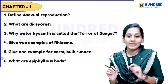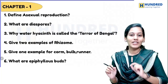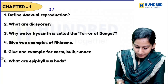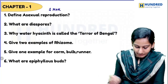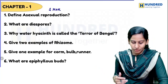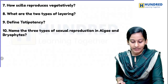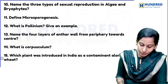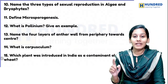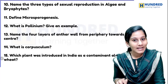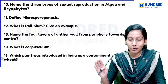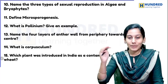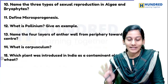Chapter one is asexual and sexual reproduction in plants. These are all the two-mark questions which can be asked: diaspore examples, grafting, layering. Then microsporogenesis — for two marks, just write the definition alone. For five marks, define microsporogenesis step by step with the diagram.